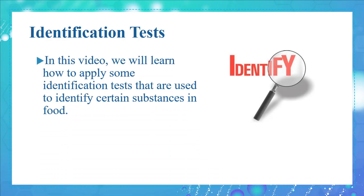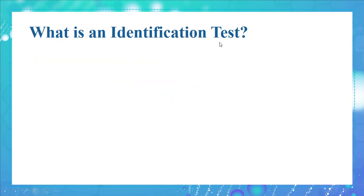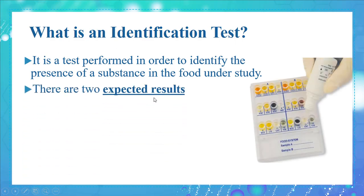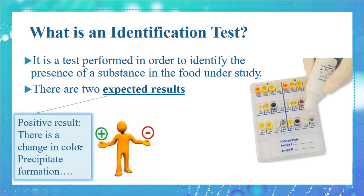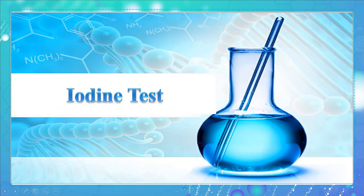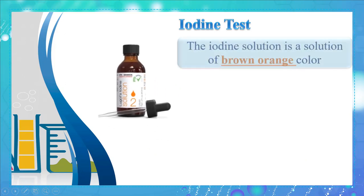In this video, we will learn how to apply some identification tests that are used to identify certain substances in food. An identification test is a test performed in order to identify the presence of a substance in the food under study. There are two expected results: a positive and a negative one. Positive results include a change in color, precipitate formation, or any other change. Negative results include any result other than the expected result.